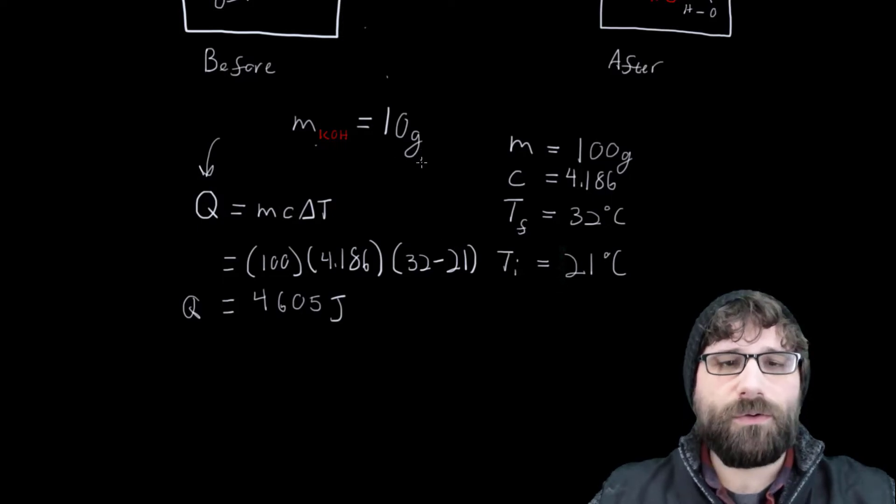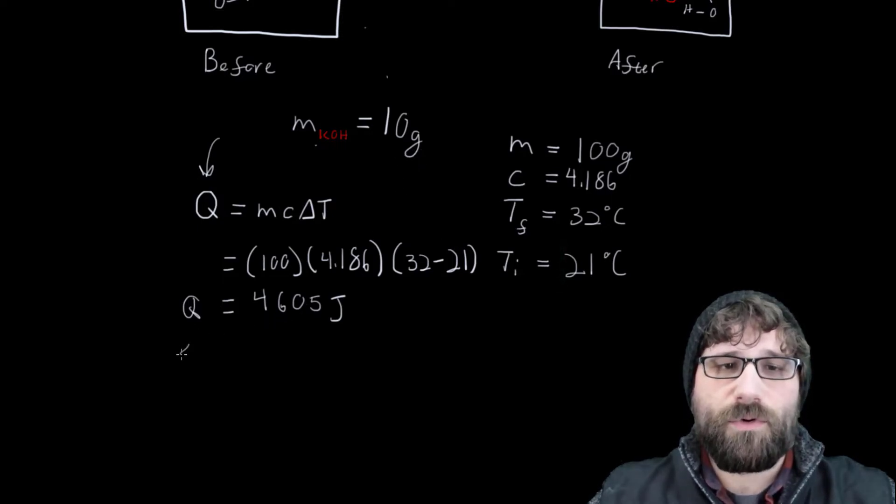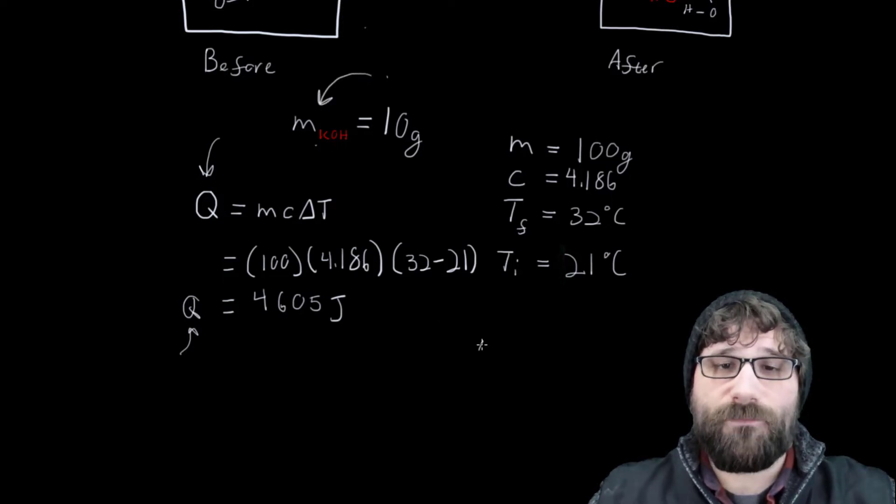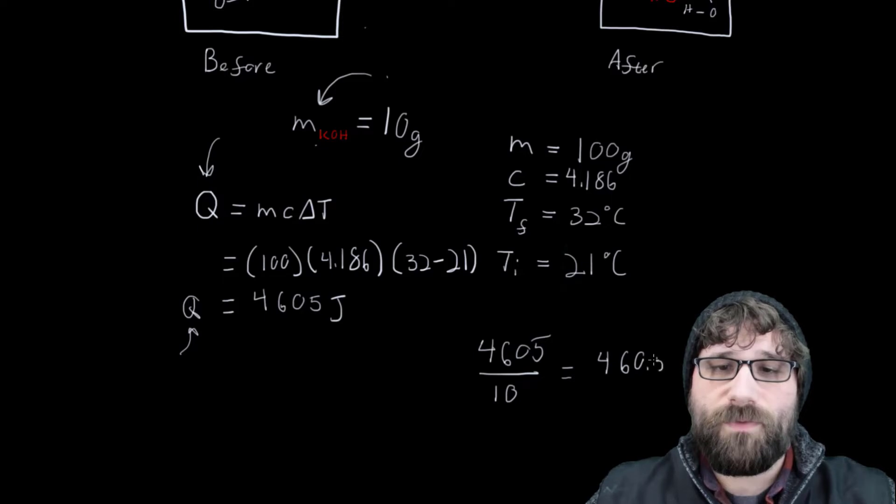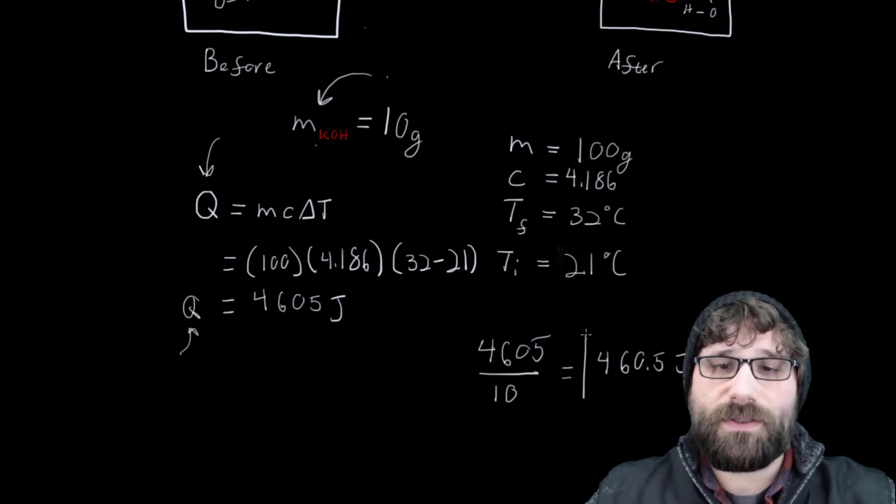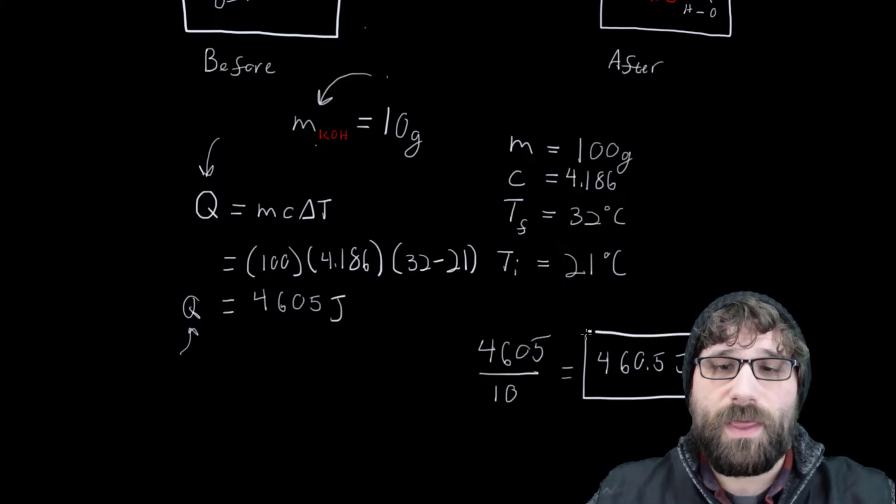So all I need to do here is take this number and divide it by this amount. So I'm going to take 4,605 divided by 10, giving me 460.5 joules per gram. And this is the number that I need for that lab write up.